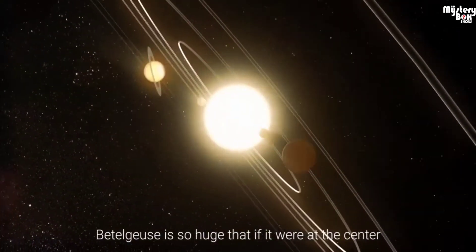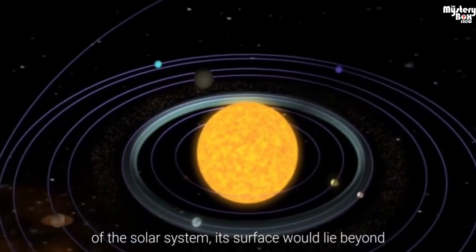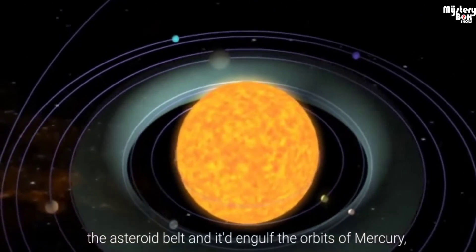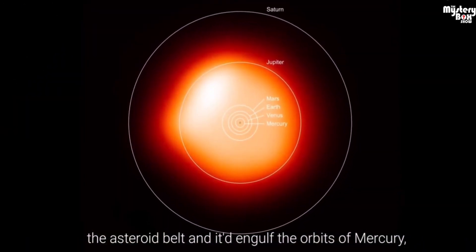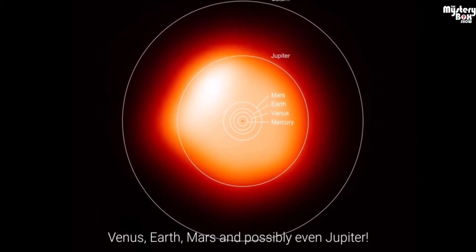Betelgeuse is so huge that if it were at the center of the solar system, its surface would lie beyond the asteroid belt and it would engulf the orbits of Mercury, Venus, Earth, Mars and possibly even Jupiter.